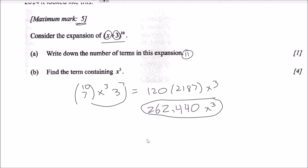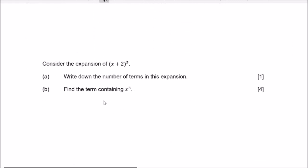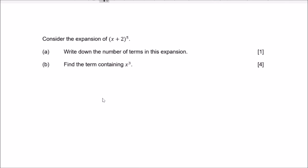For a very similar question on (x plus 2) to the 5th: how many terms? That's a 5, so there are 6. To find the term with x cubed: the coefficient is 5 choose r, with x to the 3rd and 2 to some power. Since 3 plus 2 equals 5, the 2 must be squared. So r equals 2, giving 5 choose 2 equals 10, and 2 squared is 4. So the term is 40x cubed.